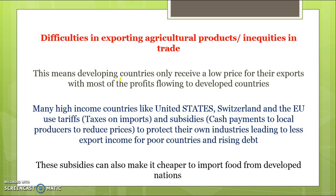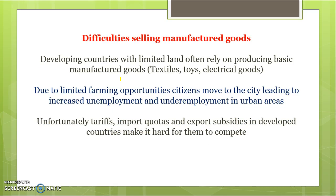Not only is there a reduction in exports because of increased tariffs and subsidies on products from developed economies, but the subsidies can be so large that developing countries actually want to import from these countries. Developing countries also have difficulty selling manufactured goods. Those with limited land rely on producing basic manufactured goods — clothes, textiles, toys, electrical goods. Citizens often move to the cities, leading to increased unemployment and underemployment. Unfortunately, tariffs, import quotas, and export subsidies make it hard for them to compete in the manufactured goods sector, just as they struggle to compete in agriculture.